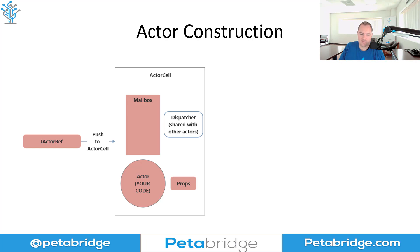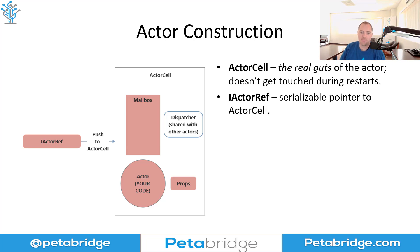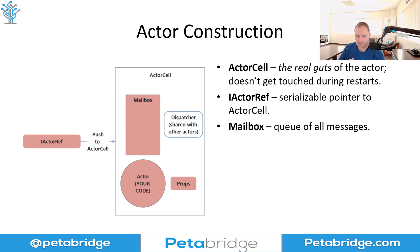What's really going on behind the scenes? Well, an actor is more than just your code. First is the actor cell — this is the real guts of the actor. This is where the actor's identity and location really exist inside the actor system, and the actor cell is what connects all these other components together to form your Akka.NET actors. The actor reference, which is the handle we use for communicating with this actor, actually points to the actor cell. Every time we send a message to an actor reference, that's going to actually deliver a message to a method on the actor cell.